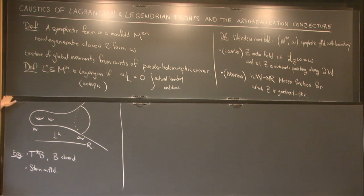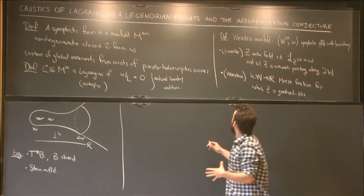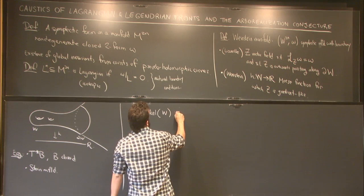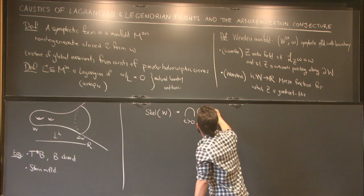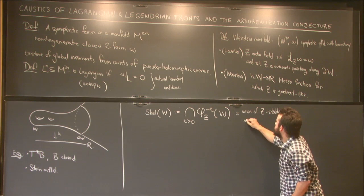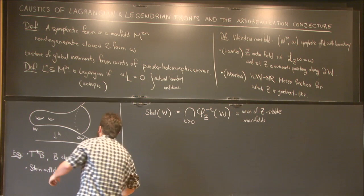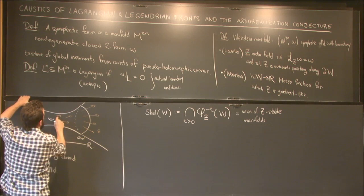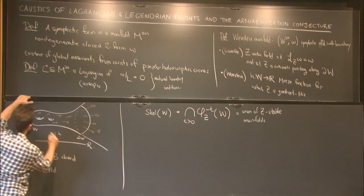Are there any questions about the definition before I proceed? Everywhere, not only near infinity. Yes, everywhere, not near infinity. Okay. So consider the skeleton, which is defined as the attractor of the negative flow of the vector field. So you take this flow that is pointing outwards here, and you take its backwards flow, and you get some kind of skeleton.